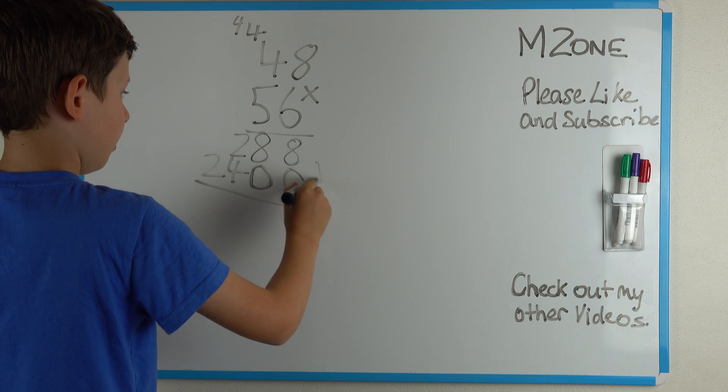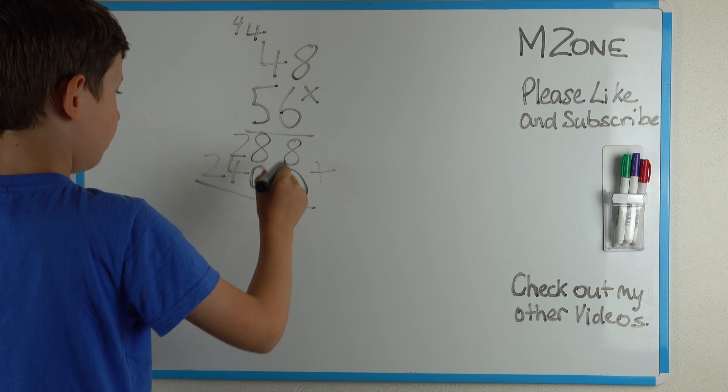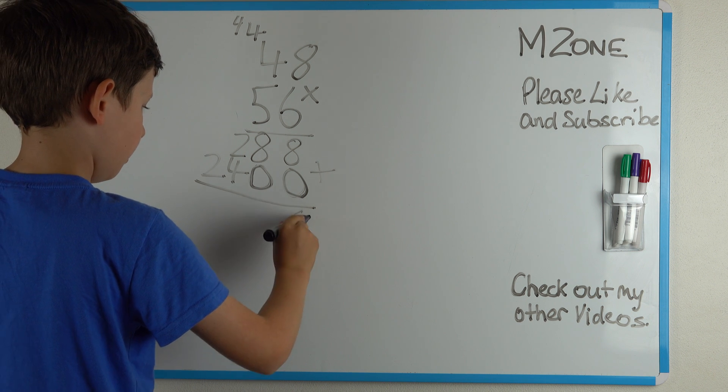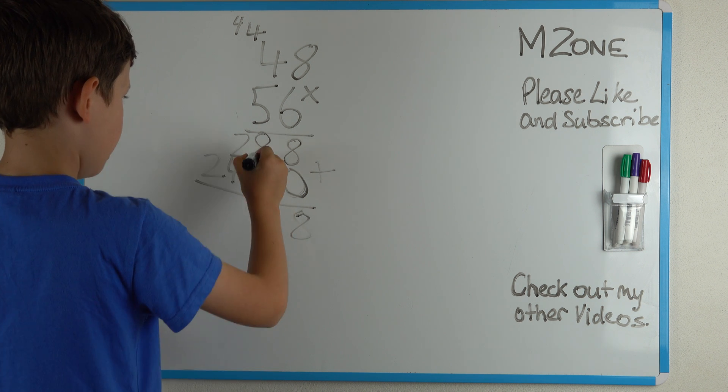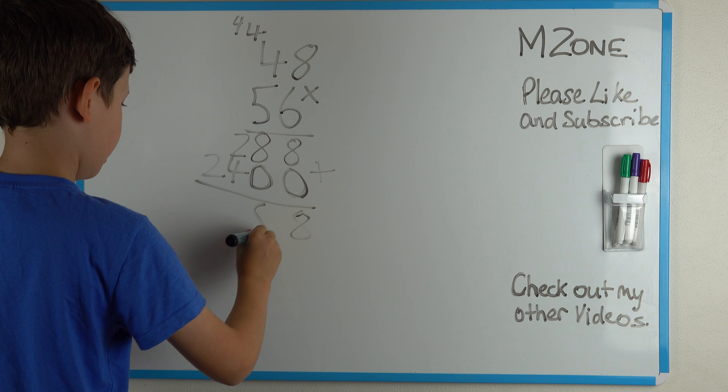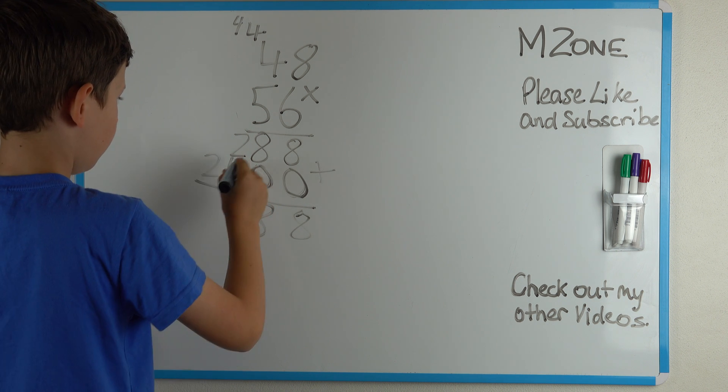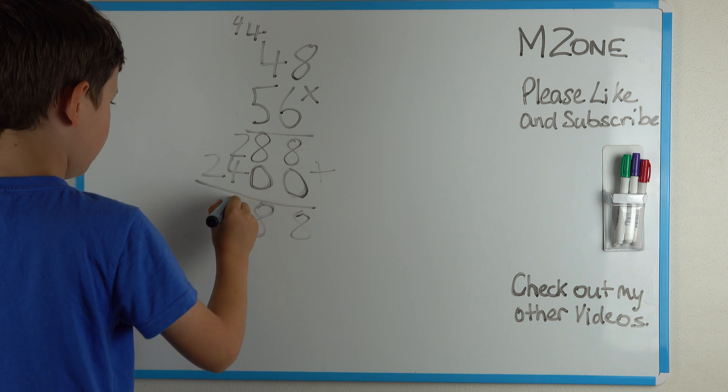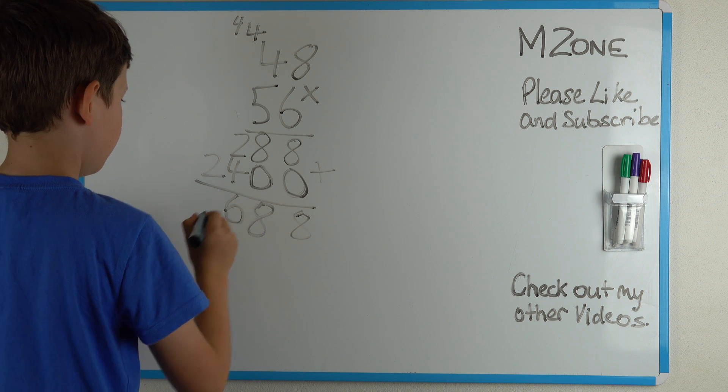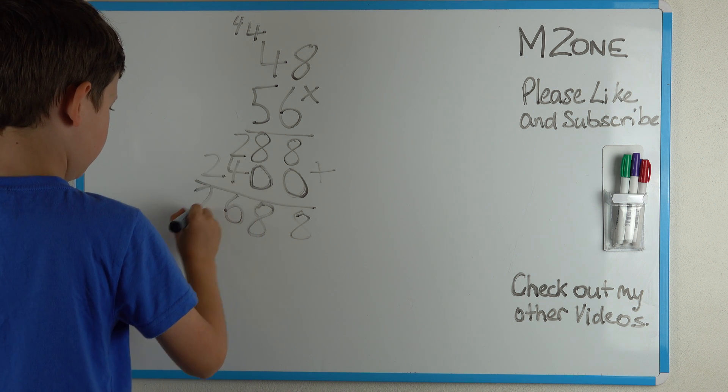Now we can start adding. 8 plus 0 is 8. 8 plus 0 is 8 again. 4 plus 2 is 6. 2 plus nothing is 2.